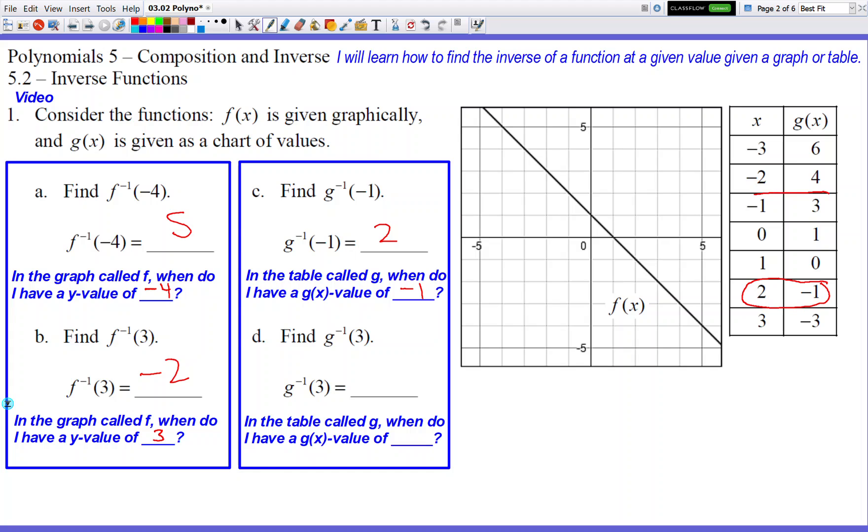Okay, so here's where a lot of kids make a mistake. They circle this one instead because they see a negative 1. But you got to remember, we're doing the opposite. They're giving us the answer. We got to find what x value created that number, negative 1, and the 2 did that.